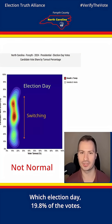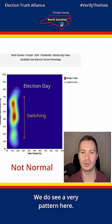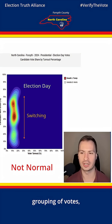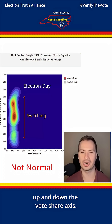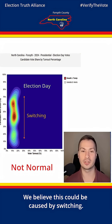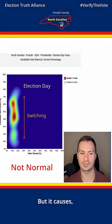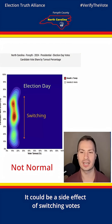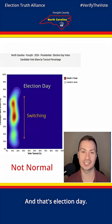On election day, 19.8 percent of the votes were cast — not a huge amount, but a solid amount. We see a very distinct pattern here: instead of that more circular grouping, the precincts are pretty stretched along the vote share axis. We believe this could be caused by switching — it doesn't cause turnout to rise, but it causes the candidate to disproportionately have more votes in certain precincts, consistent with our down-ballot analysis.